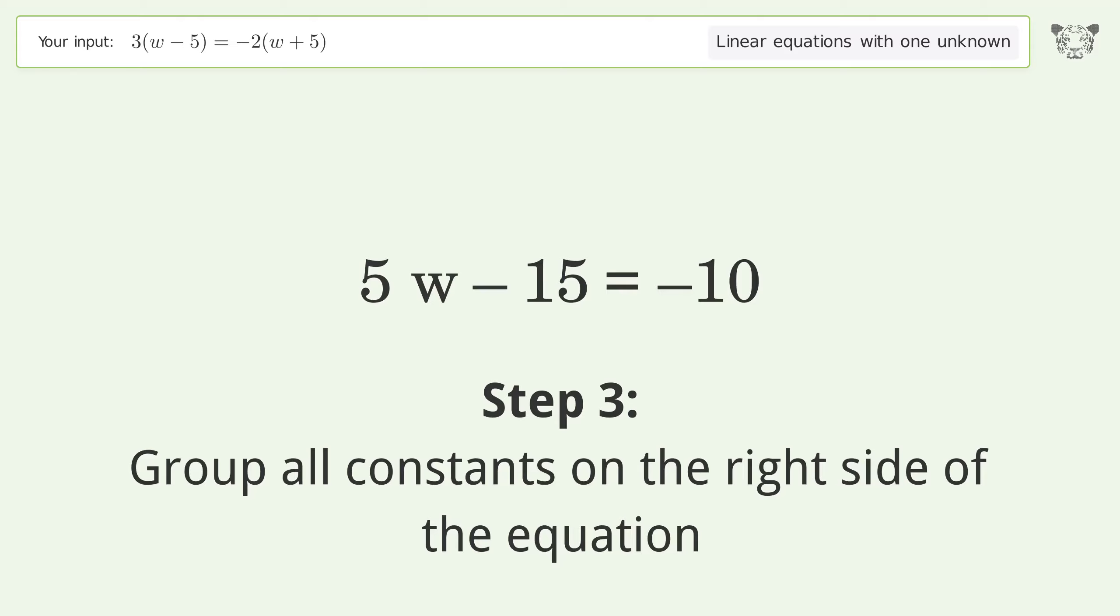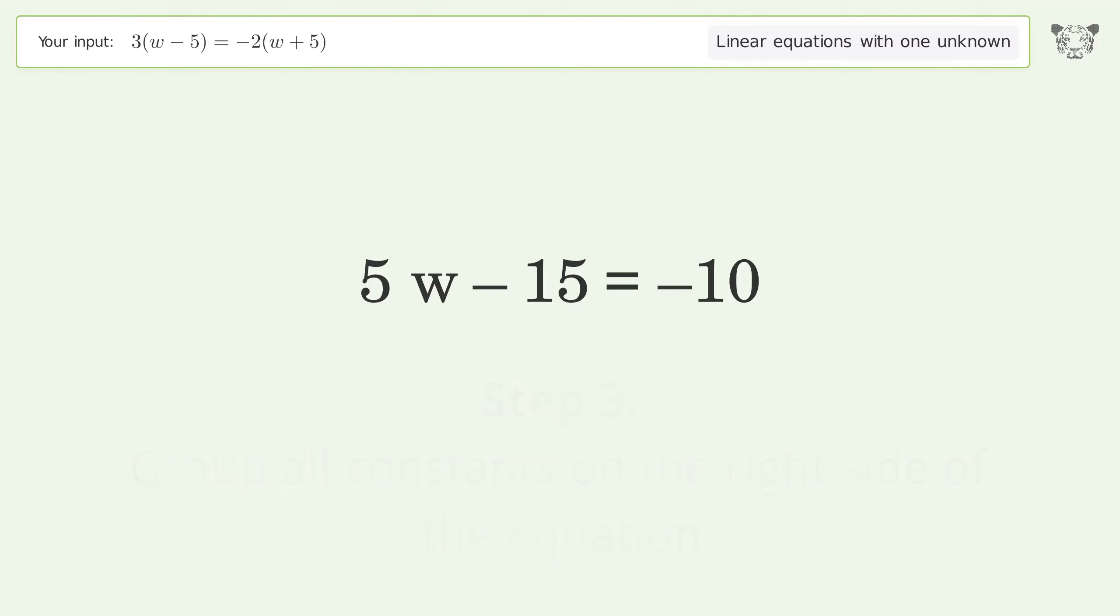Group all constants on the right side of the equation. Add 15 to both sides and simplify the arithmetic.